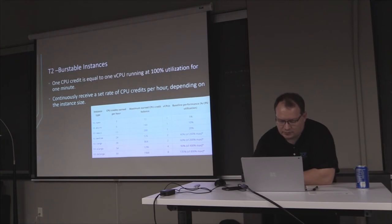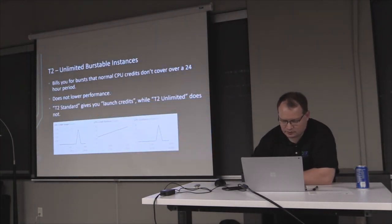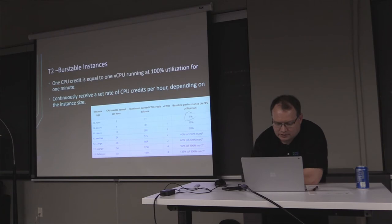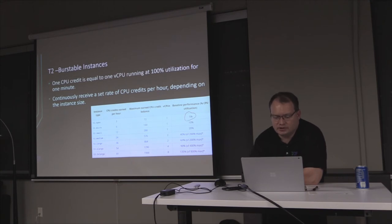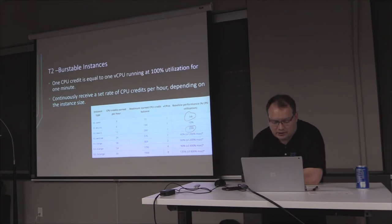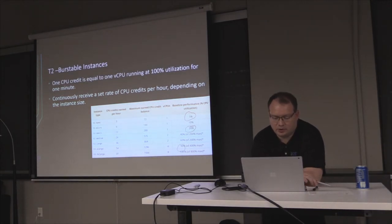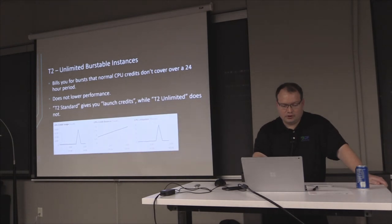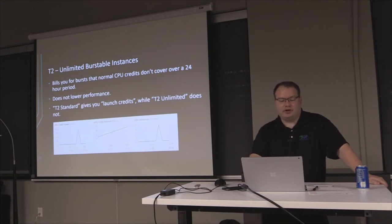Here are the baselines: the smallest burstable instance has a 5% baseline — go above 5% and you start spending credits. A Small is at 20%, and an Extra Large is at 90%, so you really have to be pushing it to start spending credits on the larger sizes.